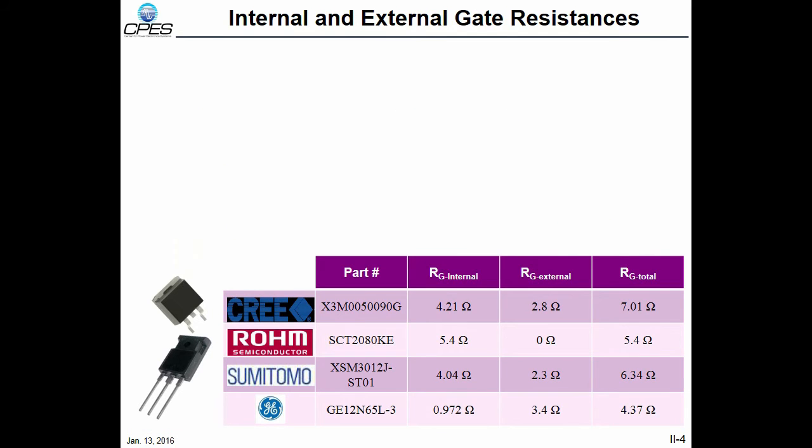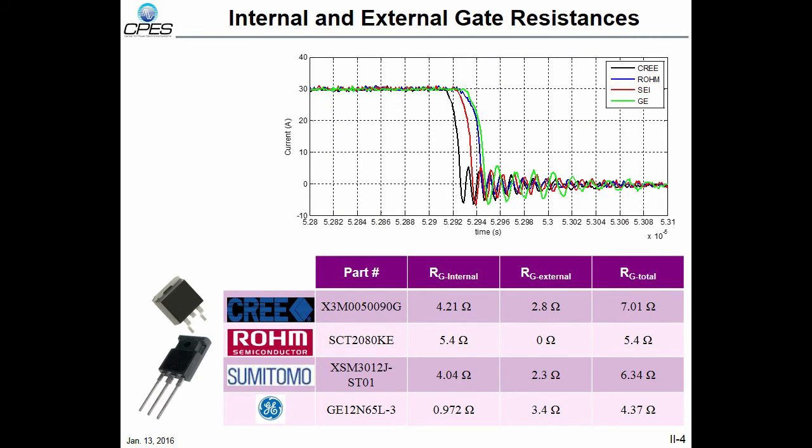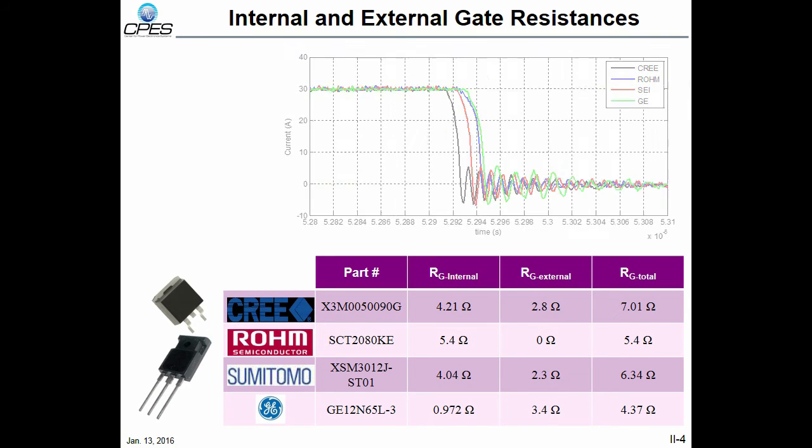This slide is showing how the gate resistance selection is done for all devices. The third column in this table is showing the internal gate resistance measured for each device. The external gate resistance is set to have the same undershoot and overshoot on the current waveform of all devices when switching. The last column shows the total gate resistance resulting.